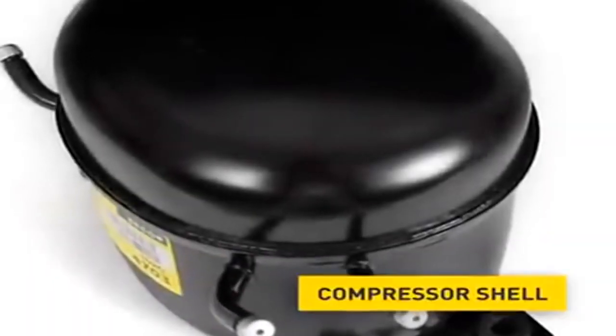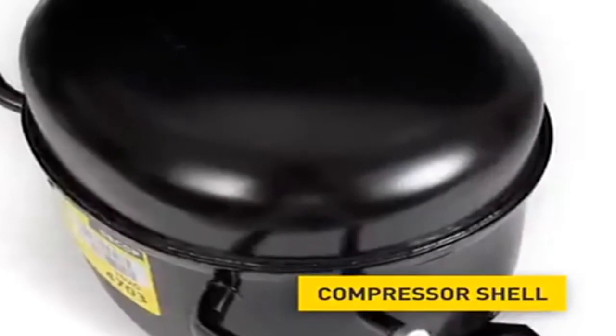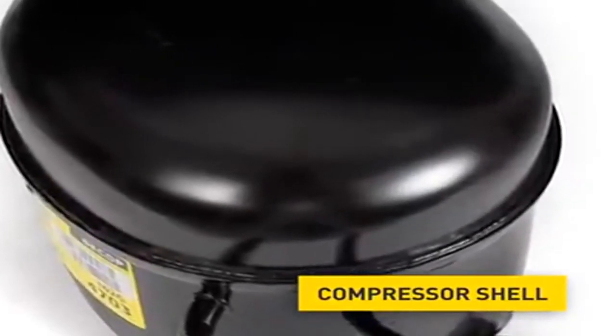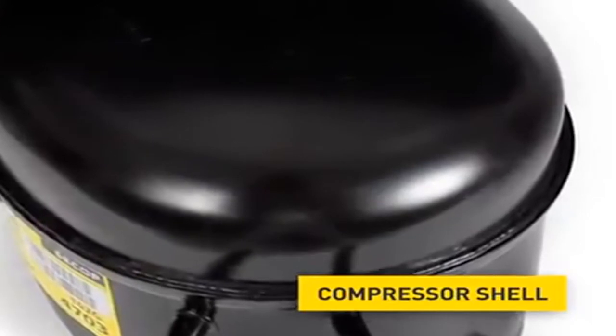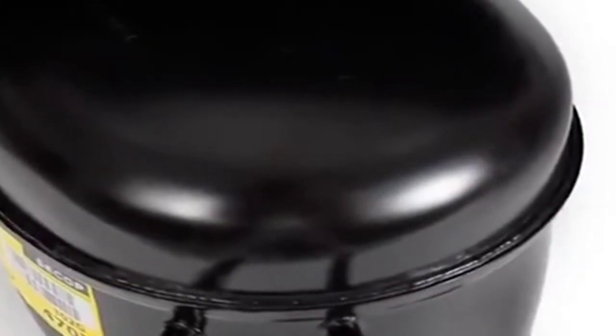The Compressor Shell. It consists of a punched steel sheet. The cover is welded together with the housing. This connection is hermetically sealed to prevent a leakage of the refrigerant.